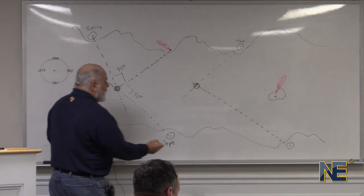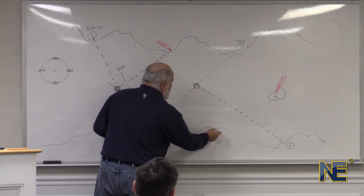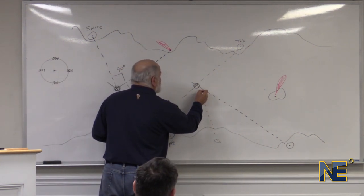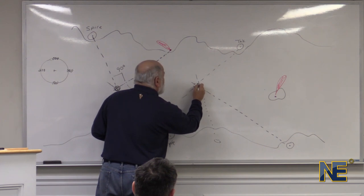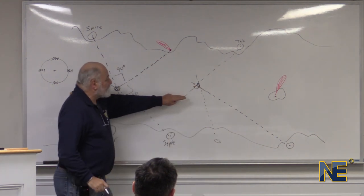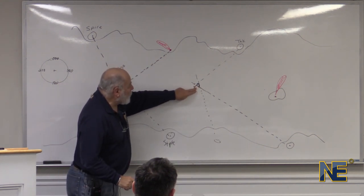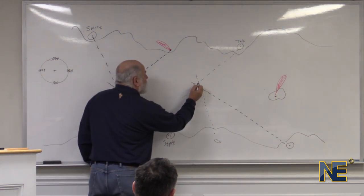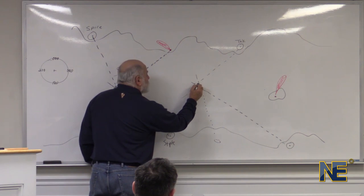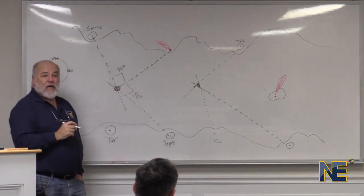If they give you three, if they give you a third one, sometimes instead of having a perfect cross, we end up with a little triangle. See that little triangle right there? If that were the case, assume that you are right in the center of that little triangle. Put your little dot in there and use that as your position.